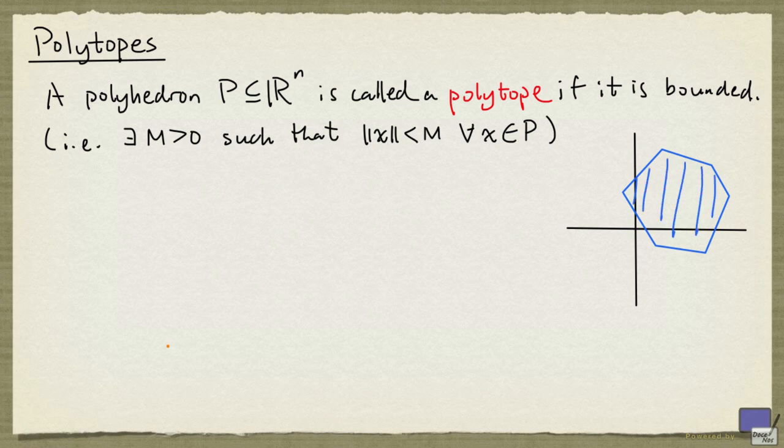Because bounded sets cannot contain lines, and the result from a previous video states that a polyhedron that does not contain a line must be pointed, we see that non-empty polytopes are pointed. In fact, we know a bit more, and we are going to prove the following result.